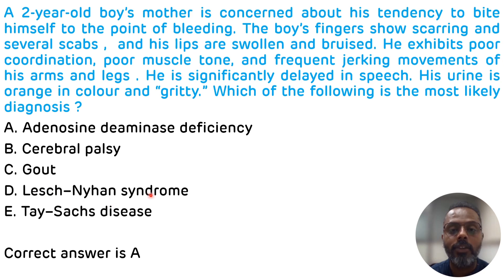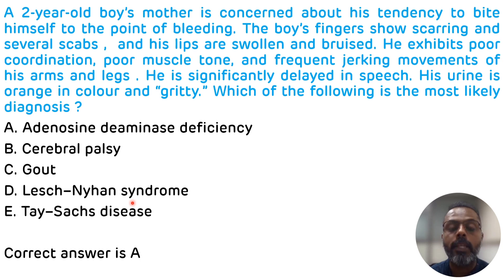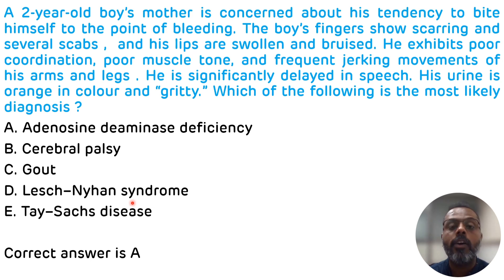We are left with one option: Lesch-Nyhan syndrome — the correct diagnosis. Lesch-Nyhan syndrome occurs due to deficiency of the HGPRT enzyme, hypoxanthine-guanine phosphoribosyltransferase. Deficiency of this enzyme prevents salvage of hypoxanthine and guanine to their respective nucleotides — inosine monophosphate (IMP) and guanosine monophosphate (GMP) — which results in increased purine synthesis, increased purine breakdown, and overproduction of uric acid.